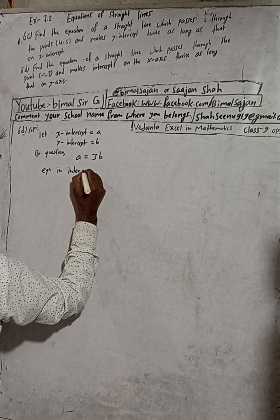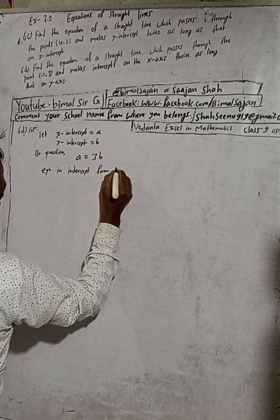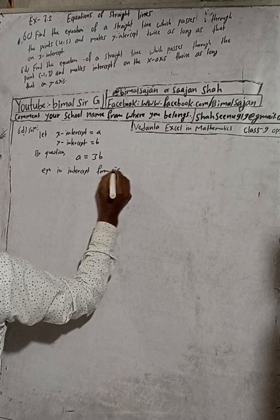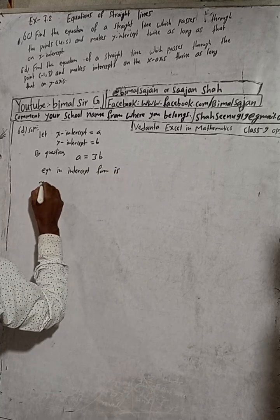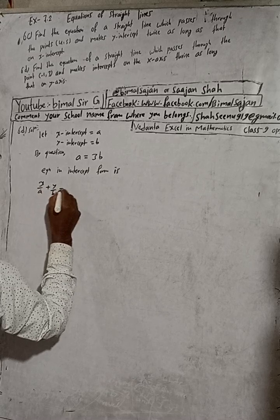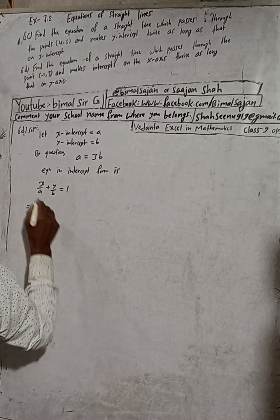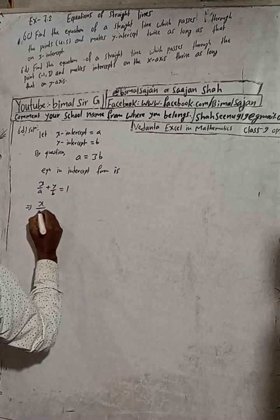Now the equation in intercept form, sometimes this intercept form is also known as double intercept form, what is that? x by a plus y by b is equal to 1.